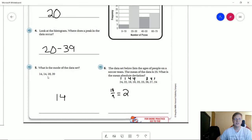For number five, the mode, the only number that's repeated would be 14. And for number six, the mean given was 23. So we end up with a value of 18 on the top divided by nine data points for a mean absolute deviation of two.